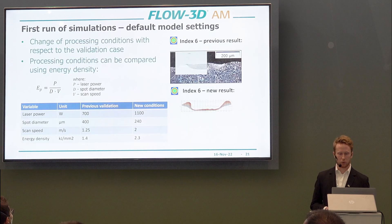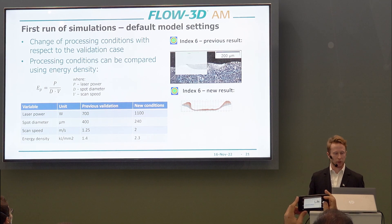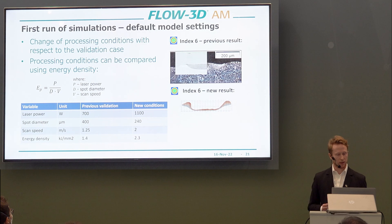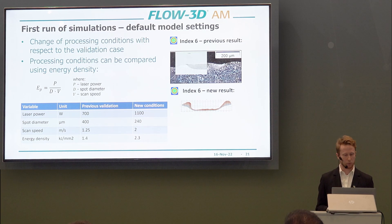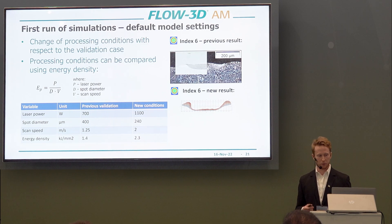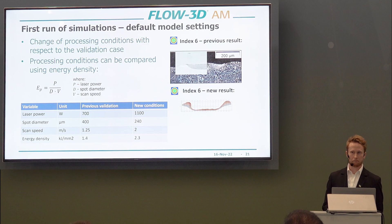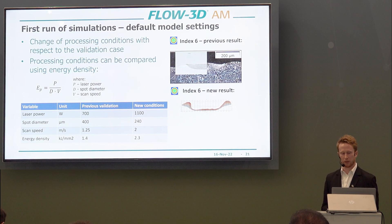Going back to the validation case, we had parameters of 700 watts, a spot diameter of 400 microns, and 1.25 meters per second scanning speed, yielding an energy density of 1.4 kilojoules per millimeter squared. In the new conditions, we nearly doubled that energy density, placing us in a regime where evaporation of the metal starts occurring more frequently — which became an additional parameter in the model that was not a factor during the original validation.